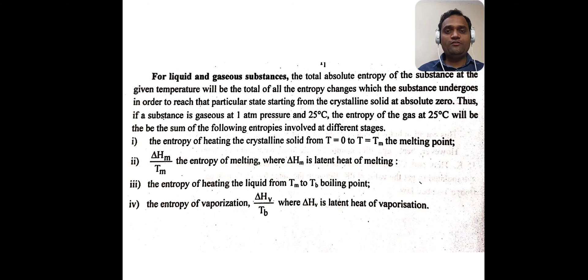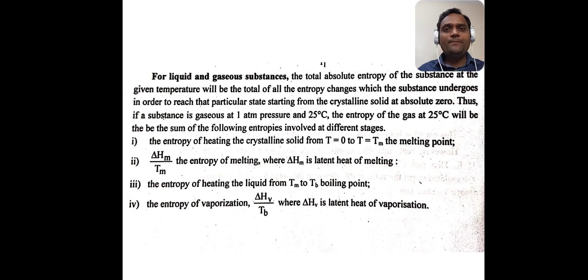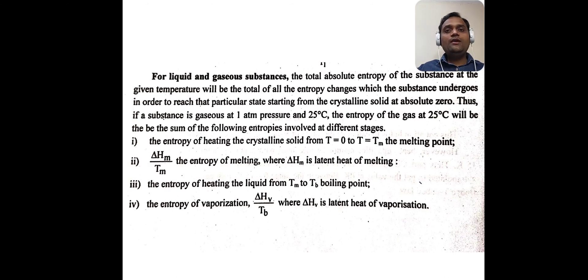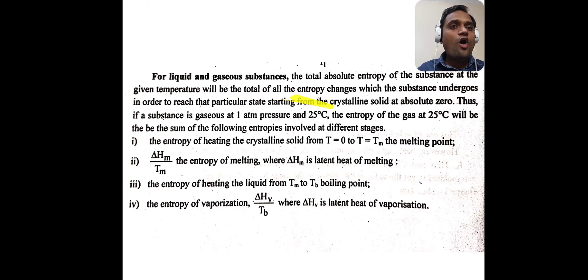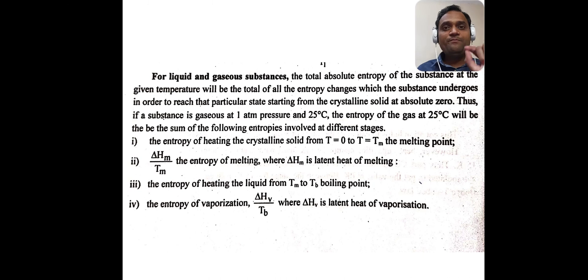This equation is for solid substances. For liquid and gaseous substances, the total absolute entropy at a given temperature is the total of all the entropy changes the substance undergoes to reach that particular state starting from the crystalline solid at absolute zero. If a substance is gaseous at 1 atmospheric pressure and 25°C, the entropy of the gas at 25°C is the sum of entropies involved at different stages.